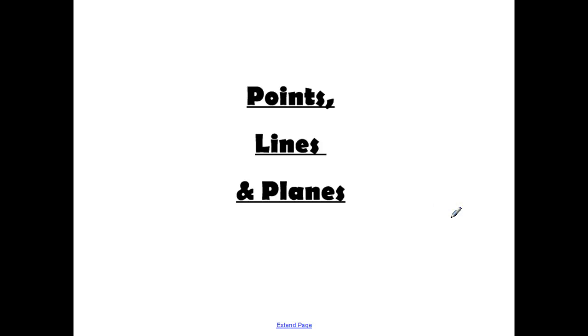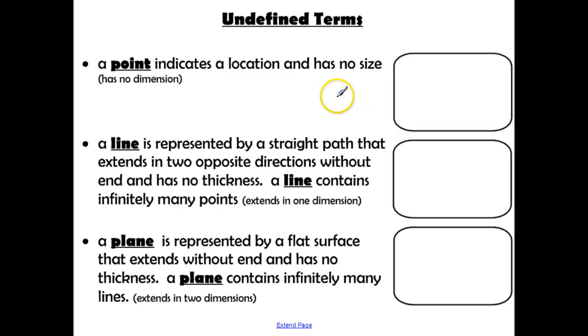Points, lines, and planes. First let's talk about a few undefined terms. A point indicates a location and has no size. It also has no dimension.